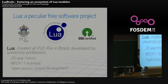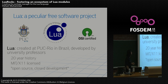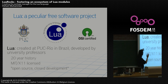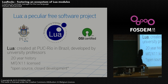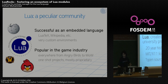Lua itself is a peculiar free software project, so dealing with building an ecosystem around it has some unique challenges. It was developed as an academic project related to an in-house project for the Brazilian oil company that eventually became an open source project — so it has a 20-year history. It is open source, but it is developed in an open-source-but-closed-development way, because the professors themselves do the development, write all the code, and publish regular releases. The development of the core virtual machine itself is not really a community project.